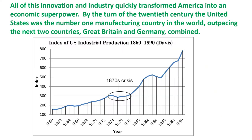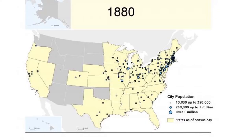All of this innovation and industry quickly transformed America into an economic superpower. By the turn of the 20th century, the United States was the number one manufacturing country in the world, outpacing the next two countries — Britain and Germany — combined. Not surprisingly, the late 19th century industrial growth led to the growth of cities.